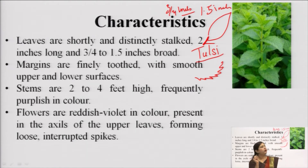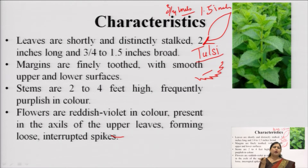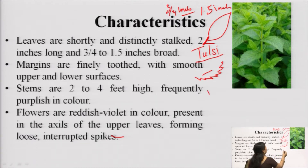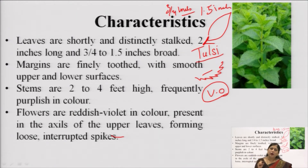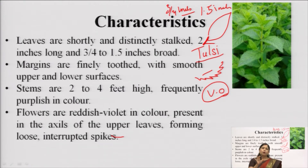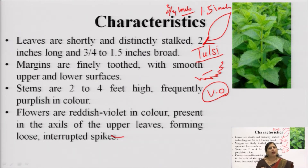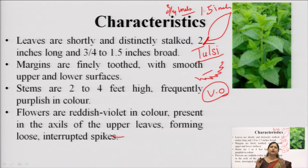The smooth surface comes because the plant has many trichomes. This is a volatile oil-containing plant, and volatile oils are normally produced from the glandular trichomes of the leaves. Under the microscope at 10x, numerous glandular trichomes are visible on the surface of the leaves, which are responsible for volatile oil production. That is why the surface is very smooth — due to many minute small structures present.